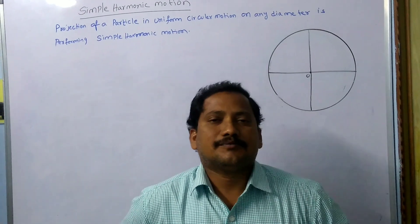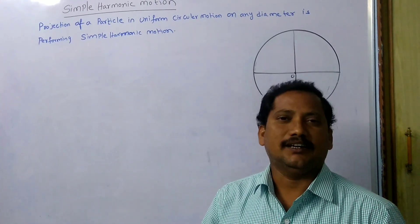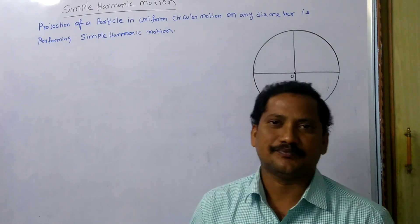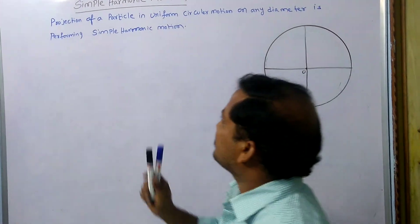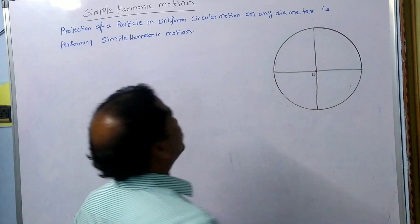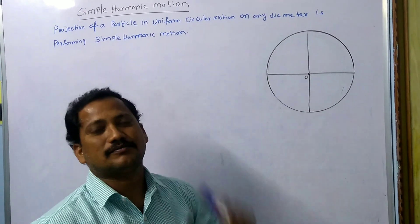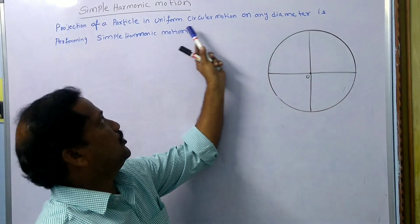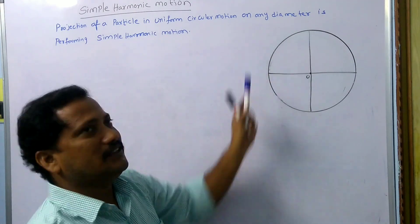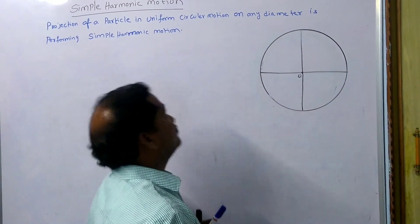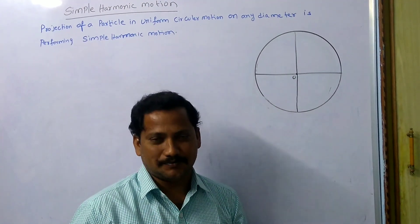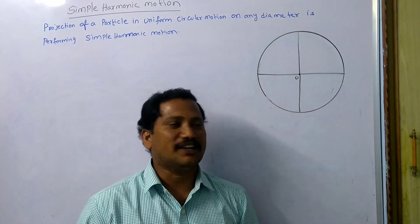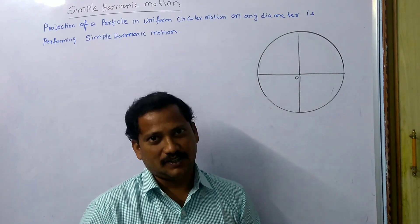Hello, good evening friends and students. Today I would like to discuss the topic of simple harmonic motion. The question is: projection of a particle in uniform circular motion on any diameter performs simple harmonic motion. How can you prove that?